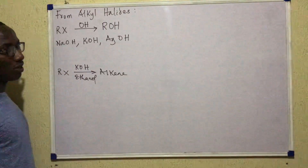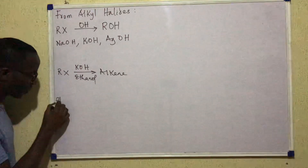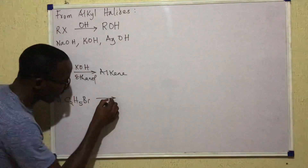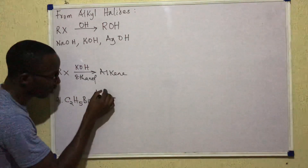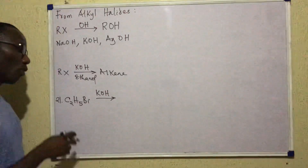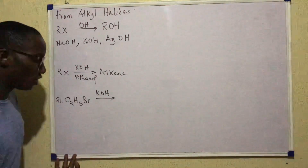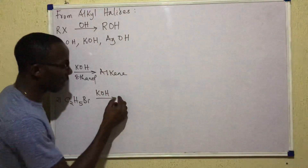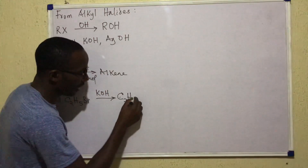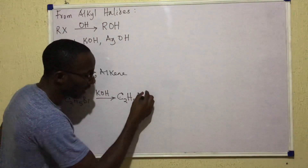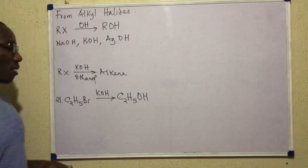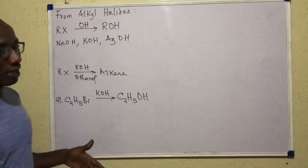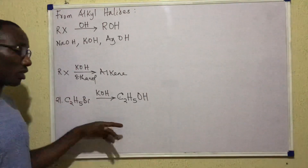Under exam conditions, consider question 21: C2H5Br reacting with KOH, no ethanol present. That means substitution takes place — simply remove the Br and replace it with OH, giving a product of C2H5OH, which is an alkenol. So alkenols can be prepared by hydrolysis of alkyl halides.